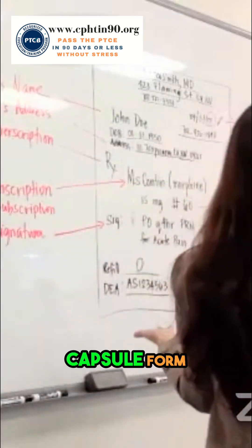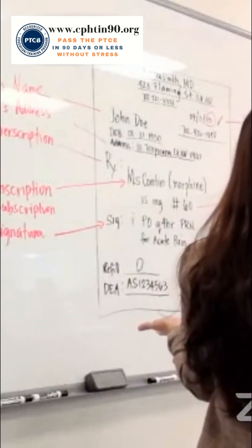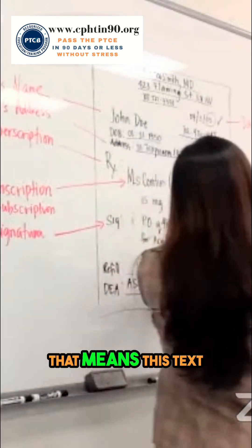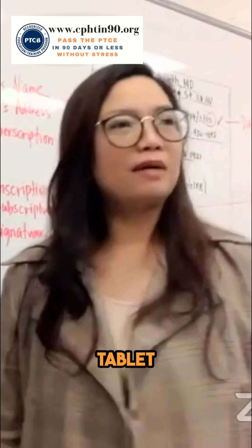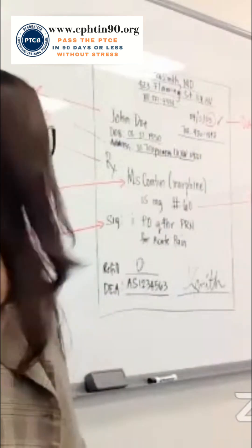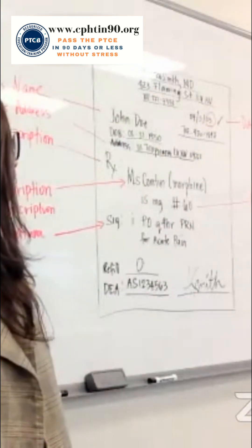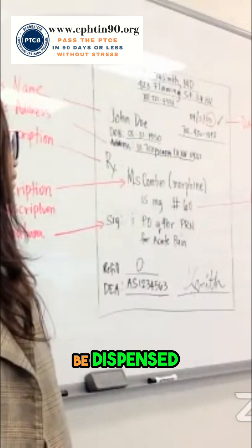So this is the quantity to be dispensed. If MS Contin comes in a tablet form or capsule form — or both — then this quantity pertains to tablets. That's the quantity to be dispensed.